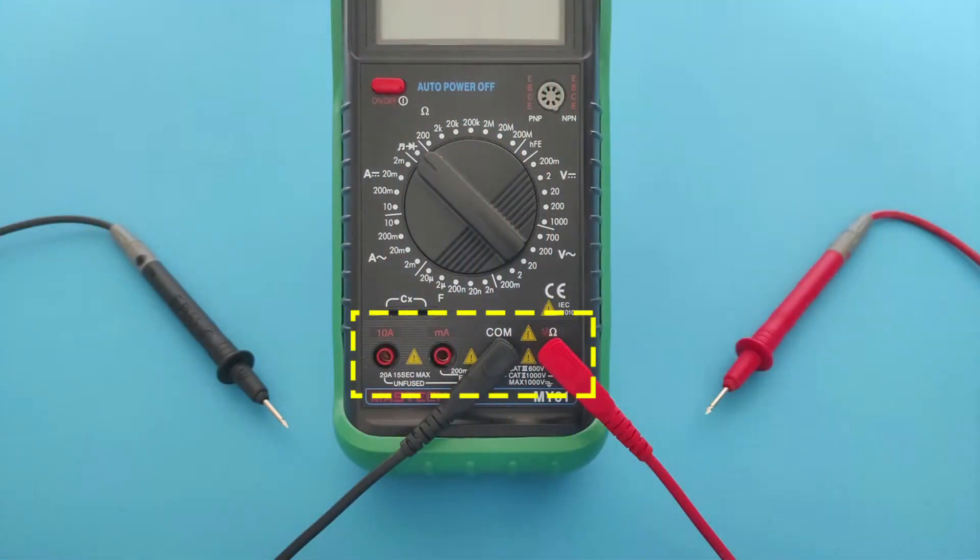It is necessary to connect the probes correctly so that the multimeter knows what needs to be measured. Port COM is a grounding or minus mark. The black probe is no different from the red one on the inside, but preventively so you don't short circuit, one probe is always black. Port V you will use this port most often. Here you measure voltage, continuity, resistance.